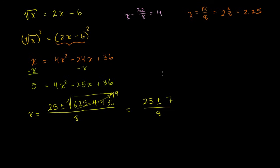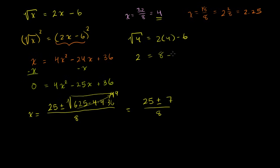Let's verify our solutions. If x equals 4, we get the principal root of 4 should equal 2 times 4 minus 6. The principal root of 4 is positive 2. And 2 times 4 minus 6 is 8 minus 6, which is also 2. This is true — so x equals 4 works.